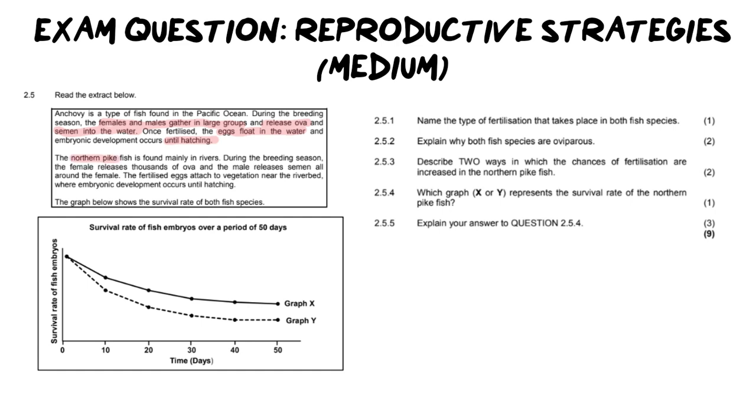Once fertilized the eggs float in the water and embryonic development occurs until hatching. The northern pike fish, a different fish, is found mainly in rivers. During the breeding season the female releases thousands of ova and the male releases semen all around the female. Again, external fertilization. The fertilized eggs attach to vegetation near the riverbed where embryonic development occurs until hatching. The graph below shows the survival rate of both fish.